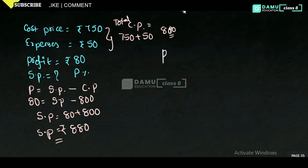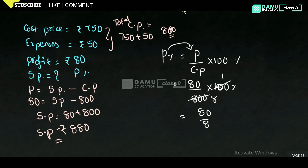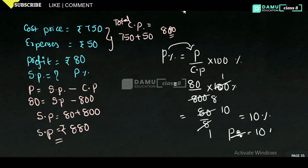Now they asked for profit percentage. Profit percentage equals profit divided by cost price, into 100. Profit is 80, cost price is 800, into 100. So profit percentage will be equal to 10%.